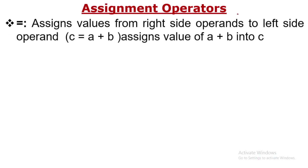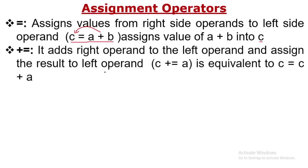The assignment operator assigns a value, shifting it from the right-hand side to the left-hand side. For example, the expression c = a + b means: add a and b on the right-hand side, then assign that result to c on the left-hand side. The next one is the plus-equal-to (+=) assignment — it is a short form. c += a is equivalent to c = c + a, where the variable c is common on both sides.